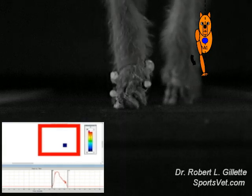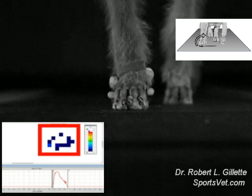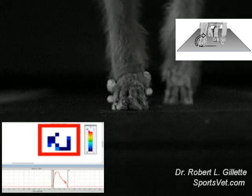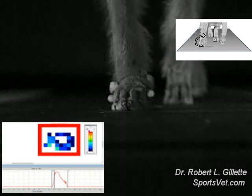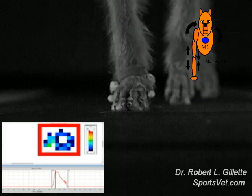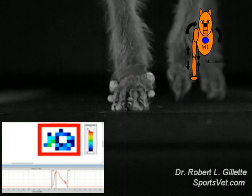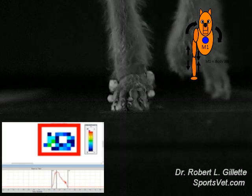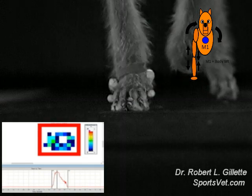The dog moves the front limb towards the center of the body to maintain its balance. This results in the lateral aspect of the paw making first contact with the surface. Then the rest of the paw comes into contact, creating an inward rotation or pronation of the paw. This results in compressive forces on the medial aspect and distractive forces on the lateral aspect of the distal limb.